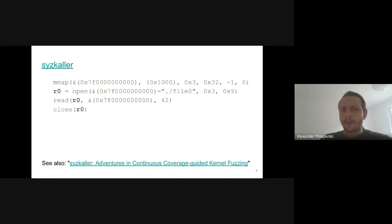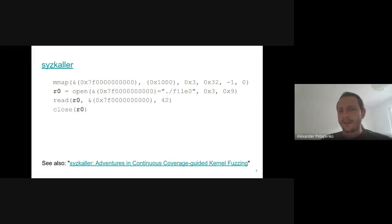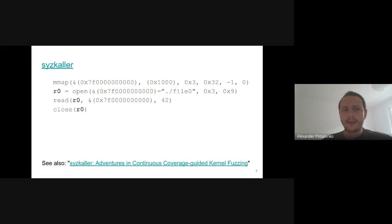I'll briefly mention Syzkaller, the kernel system call fuzzer developed by our team — today it's a tool of the trade for both kernel developers and hackers. Syzkaller uses a domain-specific language to generate random programs that stress the OS kernel by running random system calls. It is a coverage-guided fuzzer that attempts to maximize coverage while generating random programs. When combined with memory error detection tools, Syzkaller is able to detect problems quicker and with higher precision. In the past four years it has reported more than four thousand bugs in the mainline Linux kernel alone.